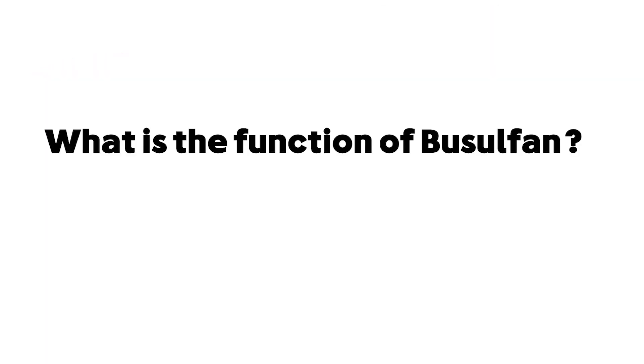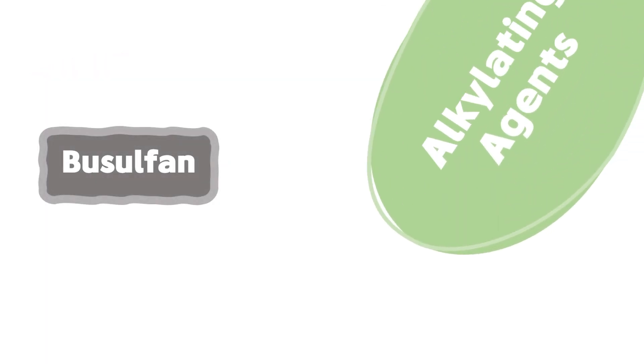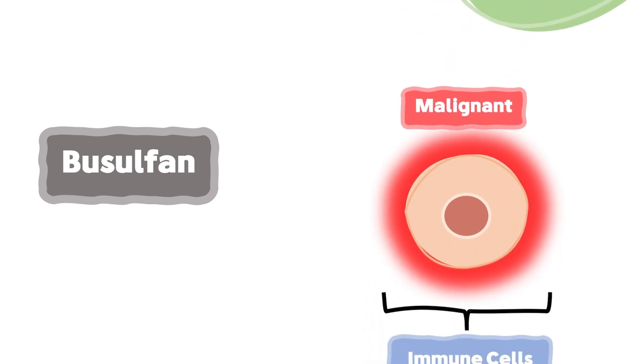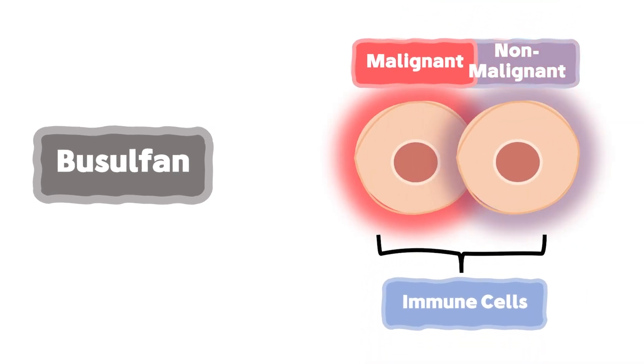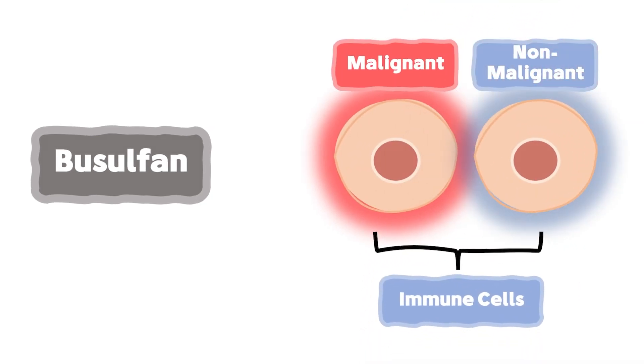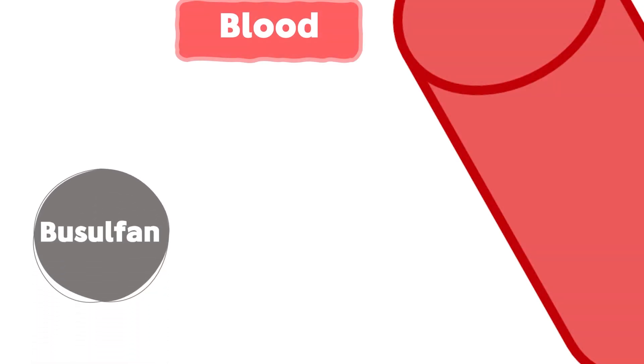What is the function of Busulfan? Busulfan is one of the alkylating agents that can kill malignant and non-malignant immune cells. Let's see how this process is taking place.